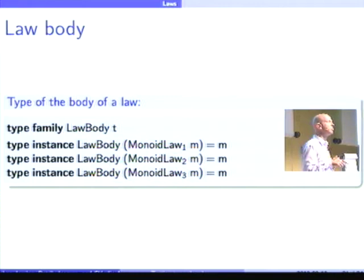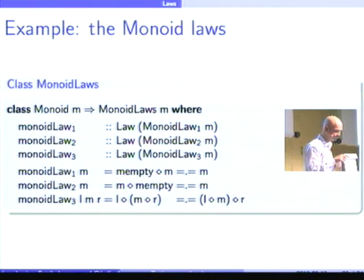For the Functor class, the types here get more interesting. But, I wanted to show the Monoid here. And now I connect these two to each other. So, I connect the monoid law, the law, with the type MonoidLaw. So, here you see that MonoidLaw1 has type Law of MonoidLaw1, where the MonoidLaw1 has a standard default implementation, returning a pair of monoid values.